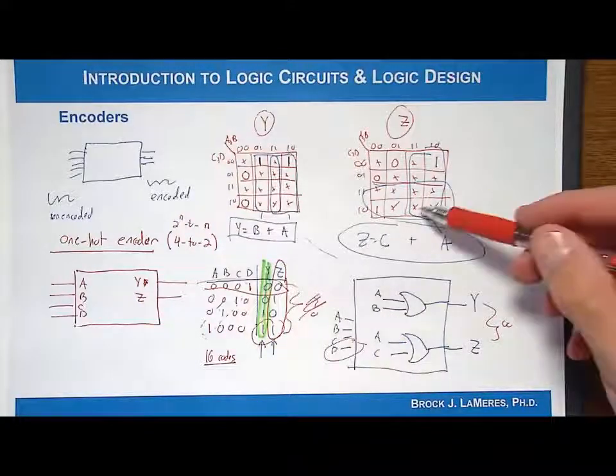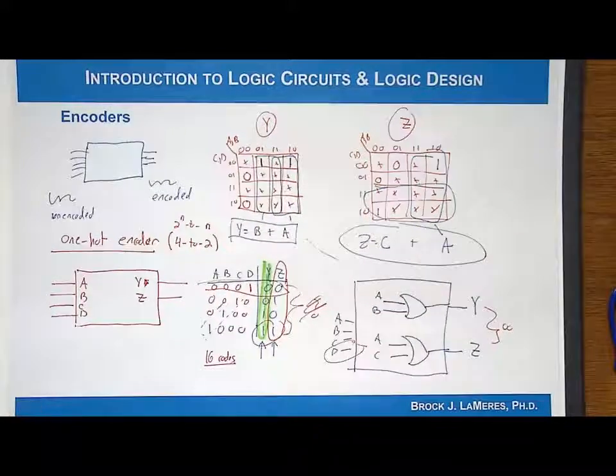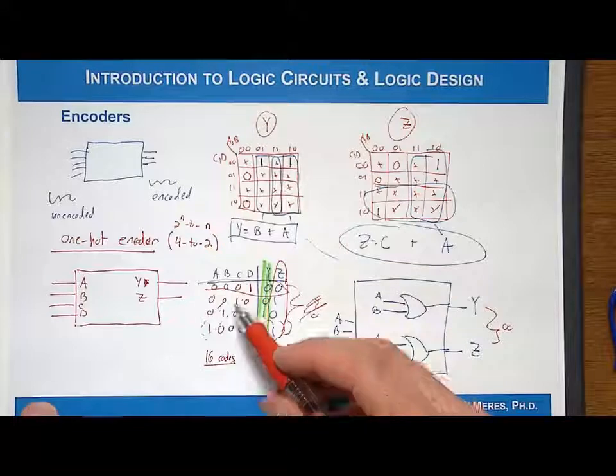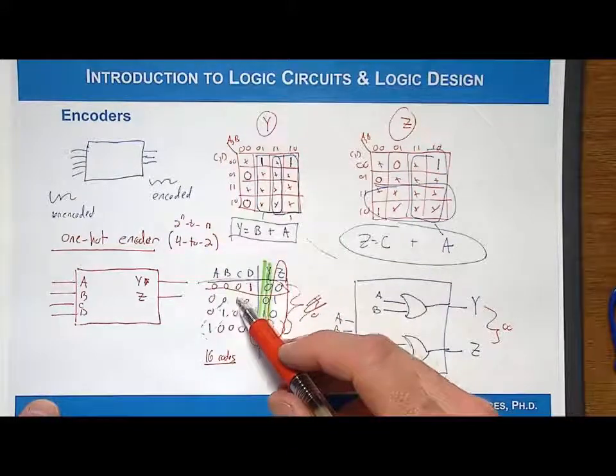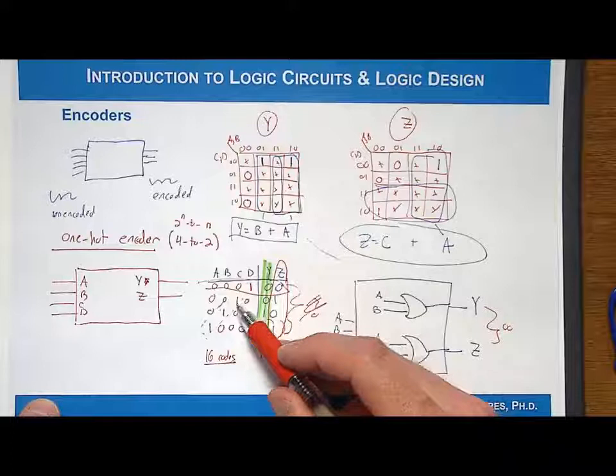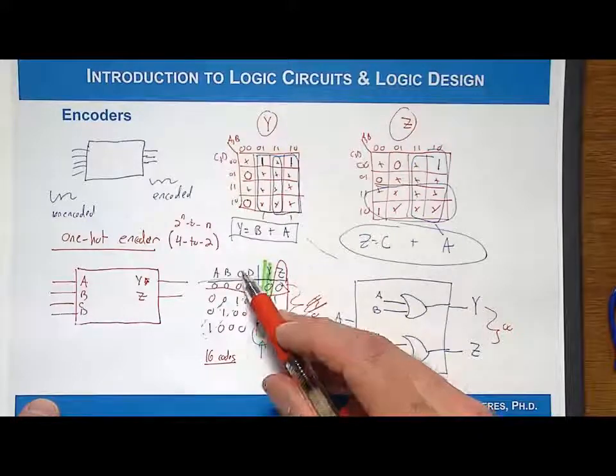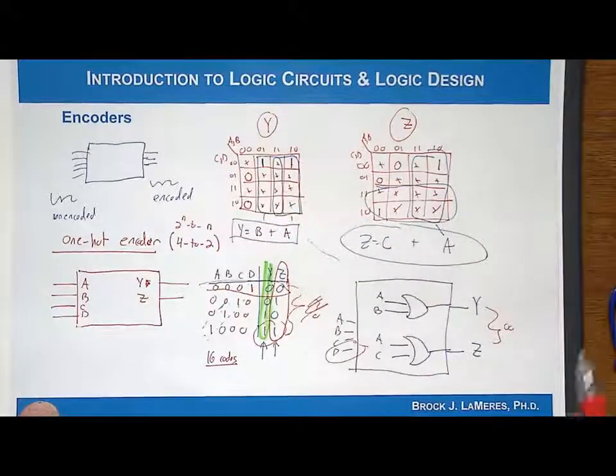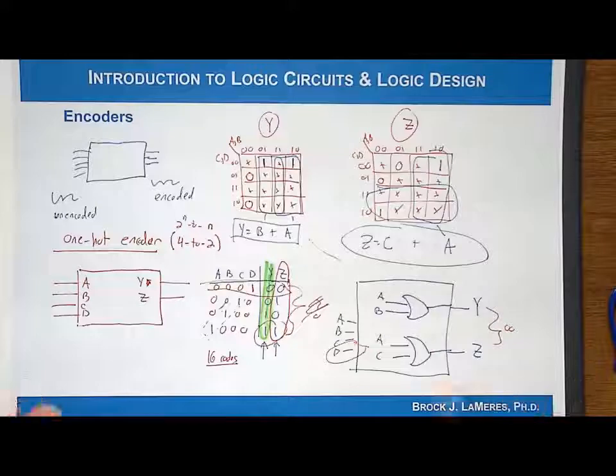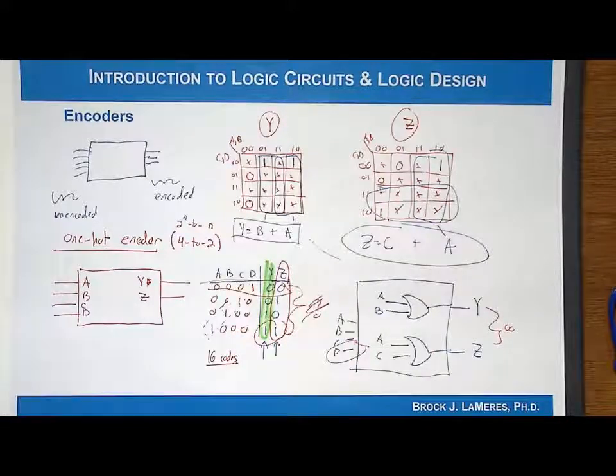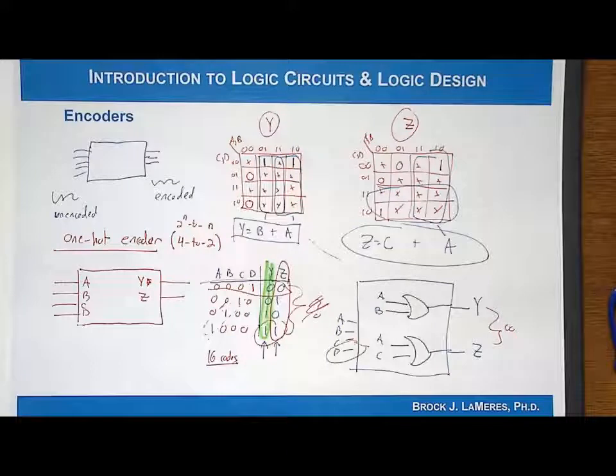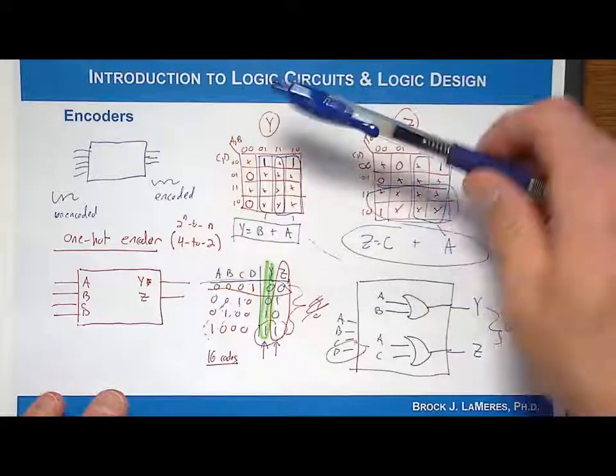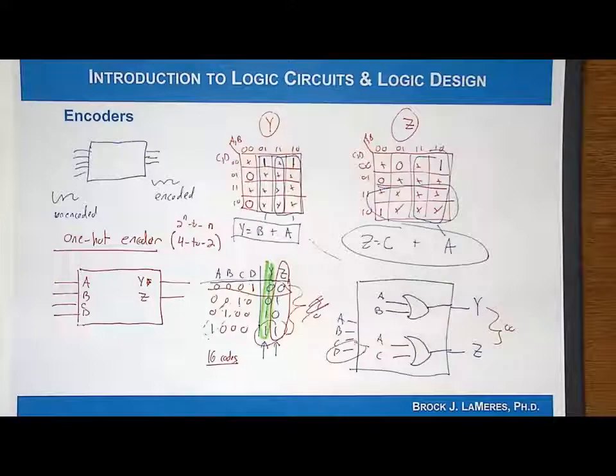Now this makes some gross assumptions. Number one, it assumes you don't care about all the other possible input codes. It also doesn't handle a situation where two inputs are asserted at the same time. There's no priority given. So if you asserted two input codes at the same time, like C and D were both asserted, this would produce some output based on how you created the prime implicants with the don't cares. If you wanted some priority, you could expand this to do a priority encoder. The number of encoders is boundless, there's tons of them. But this walks you through from start to finish how to create a one-hot encoder, and it's the same design philosophy as you do any other types of encoder.